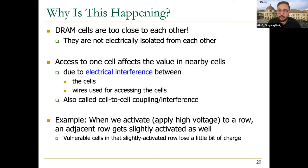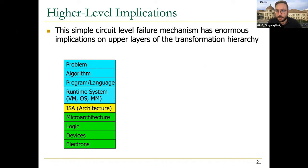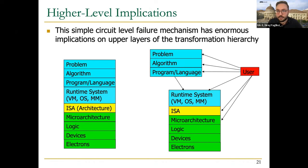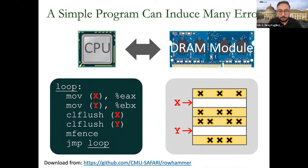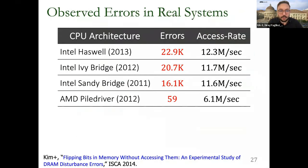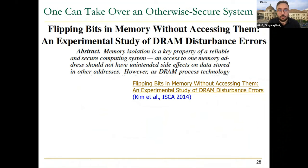When a row is activated many times, adjacent rows are disturbed through access-based charge leakage, resulting in bit flips. This affects many parts of the system stack. A simple program at the software level can induce bit flips by opening row X and then row Y in a loop. Many Intel and AMD-based systems are vulnerable to this — it's not a processor issue but a DRAM issue, and DRAM is used in many commodity systems today.